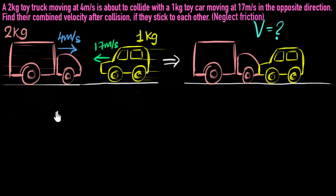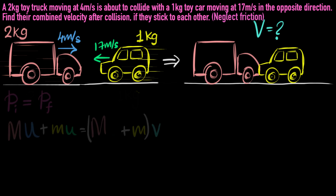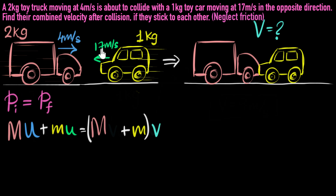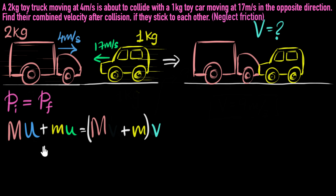Where do we start? Again, because this is a collision problem, we can start the same way we did before. The total momentum of the car and the truck before collision should equal the total momentum after the collision. And just like before, because both of them have the same final velocity, we pull V out from the equation. Now all we need to do is plug in the values and calculate what V is. These two are coming in opposite directions, so please take care of that.